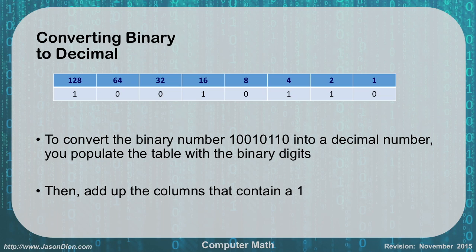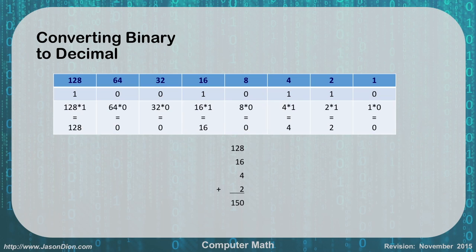The way I would do that is every column that has a 1 in it, I'm going to add that column. So in our case it would be 128 plus 16 plus 4 plus 2. So in this case we get 128 plus 16 plus 4 plus 2 equals 150.